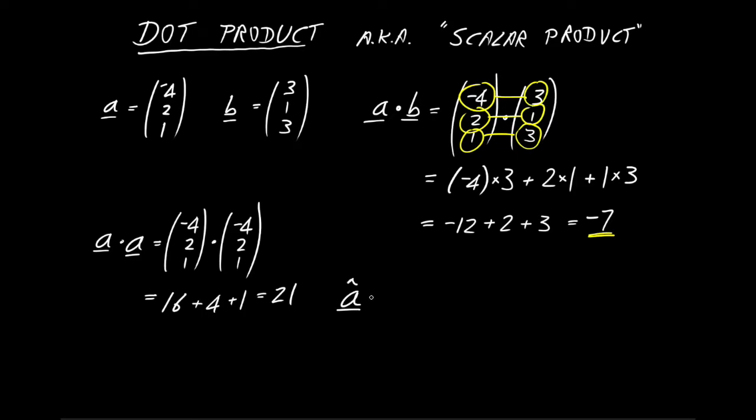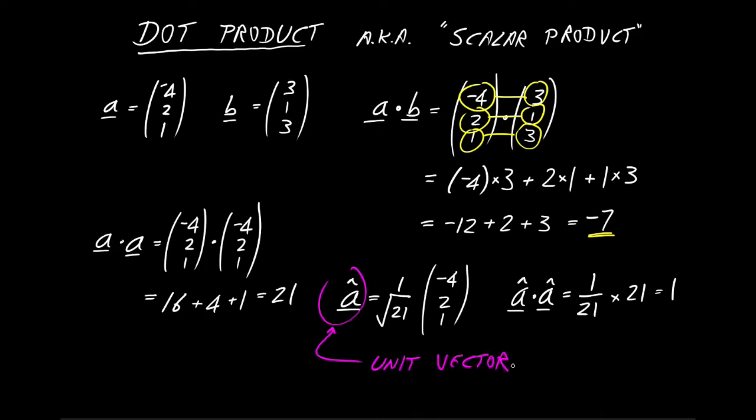Now I want to introduce a second vector called a hat. It's related to a just by scaling it by 1 over the square root of the earlier dot product with itself. So 1 over square root 21, and then -4, 2, 1 as before. Now let's see what happens if we take the dot product of a hat with itself. We get 1 over 21 times a dotted with a, which is 21. So the dot product of a hat with itself is just 1. That means a hat has a special property: it's what's called a unit vector.